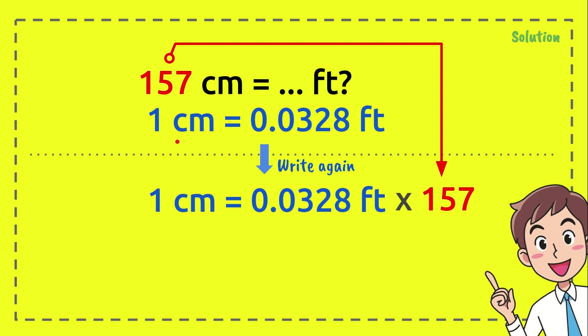In another 157 you multiply it with one centimeter. 157 times 1 equals 157 centimeters.